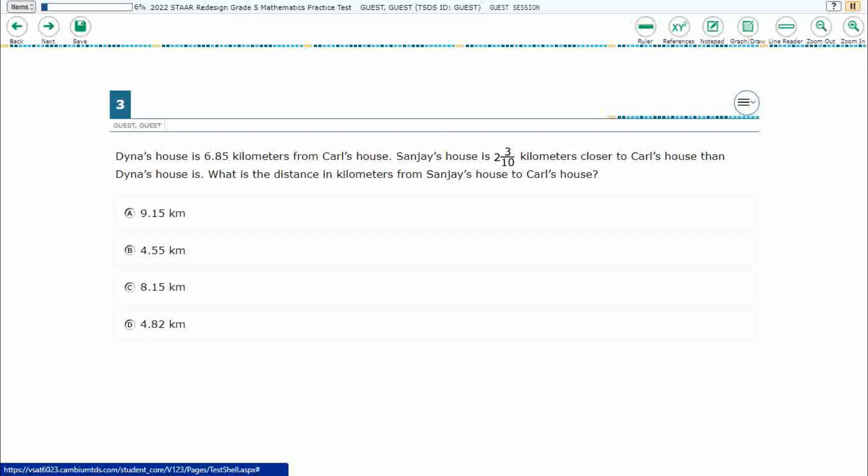So we have a few houses here. We've got Dinah's house. It's 6 and 85 hundredths, or 6.85 kilometers away from Carl's house, and then Sanjay's house is closer to Carl's house than Dinah's house is. So it looks like we have a little bit of a comparison. A lot of houses.